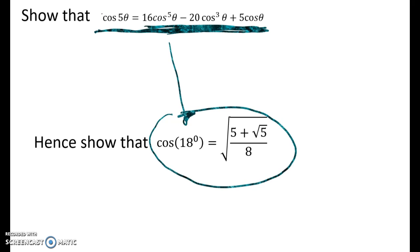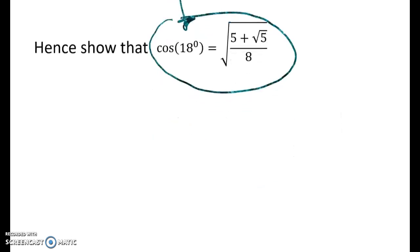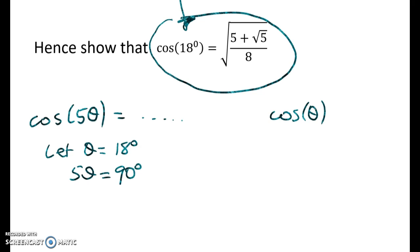So the big idea in here that we need to spot is that we have a lurking quadratic equation. But we're going to start off by saying, let's just write out what we've got. We've got cos of 5 theta is equal to all of that stuff in terms of theta. So if theta is 18 degrees, then 5 theta is 5 times 18, which is 90 degrees.